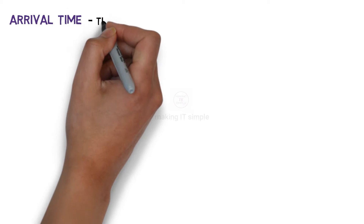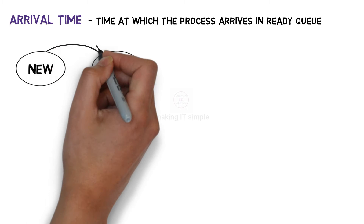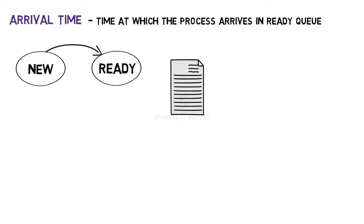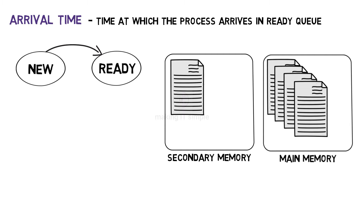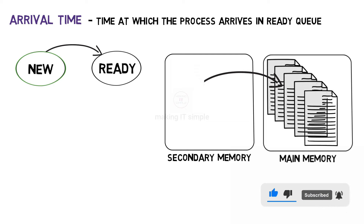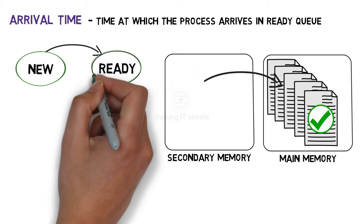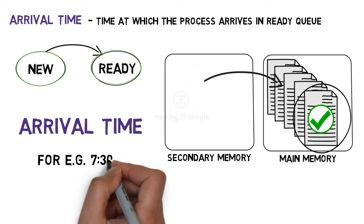Let us start with arrival time — it is the time at which the process arrives in the ready queue. A process begins its life cycle in the new state and then moves to the ready state. When you write and save a program, it is stored in the hard disk. When you need to execute it, the scheduler picks the program from secondary memory and places it in main memory. When the process is placed in the ready queue, it is in the ready state, and that particular time is the arrival time — for example, 7:30 PM.